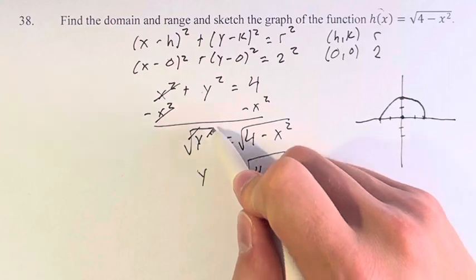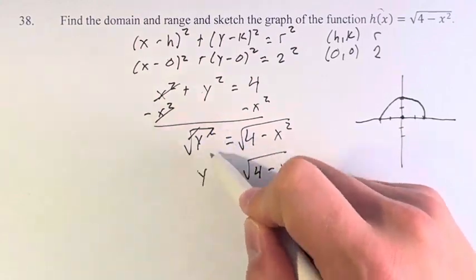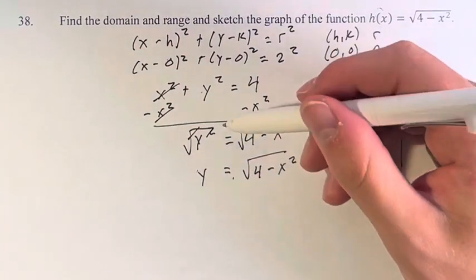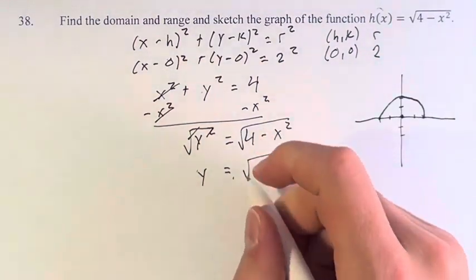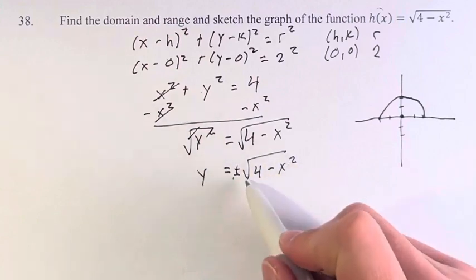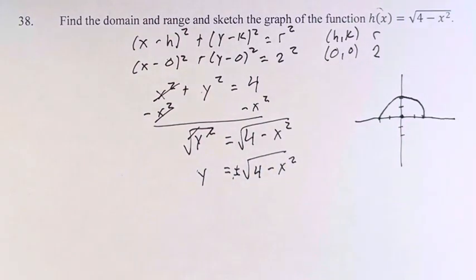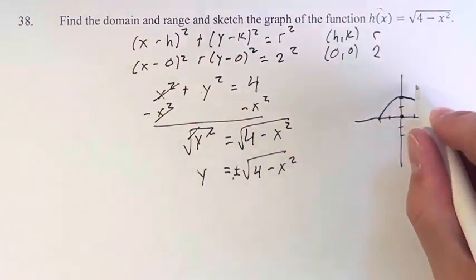Because when you're taking the square root of y², you don't know whether y is positive or negative. However, the square root of something will always be positive. So this is actually y = ±√(4 - x²). This is the equation of the circle. We are only dealing with the positive part, so we have half of a circle.